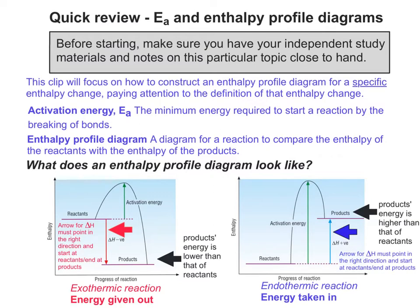In each case, the arrow for delta H must point in the right direction — therefore it must point up if it's an endothermic reaction and down if it's an exothermic one — and start at the reactants and end at the products. You can see that the arrows actually touch the reactants and the products. And finally, the activation energy arrow should start at the reactants and reach the highest part of the curve.